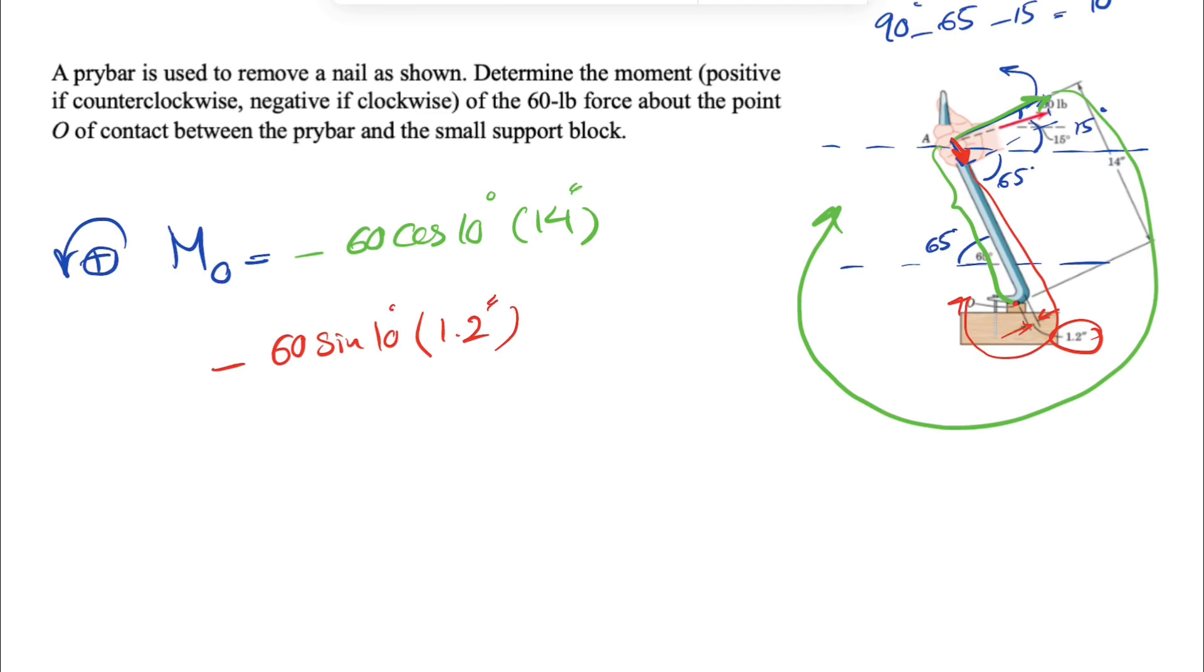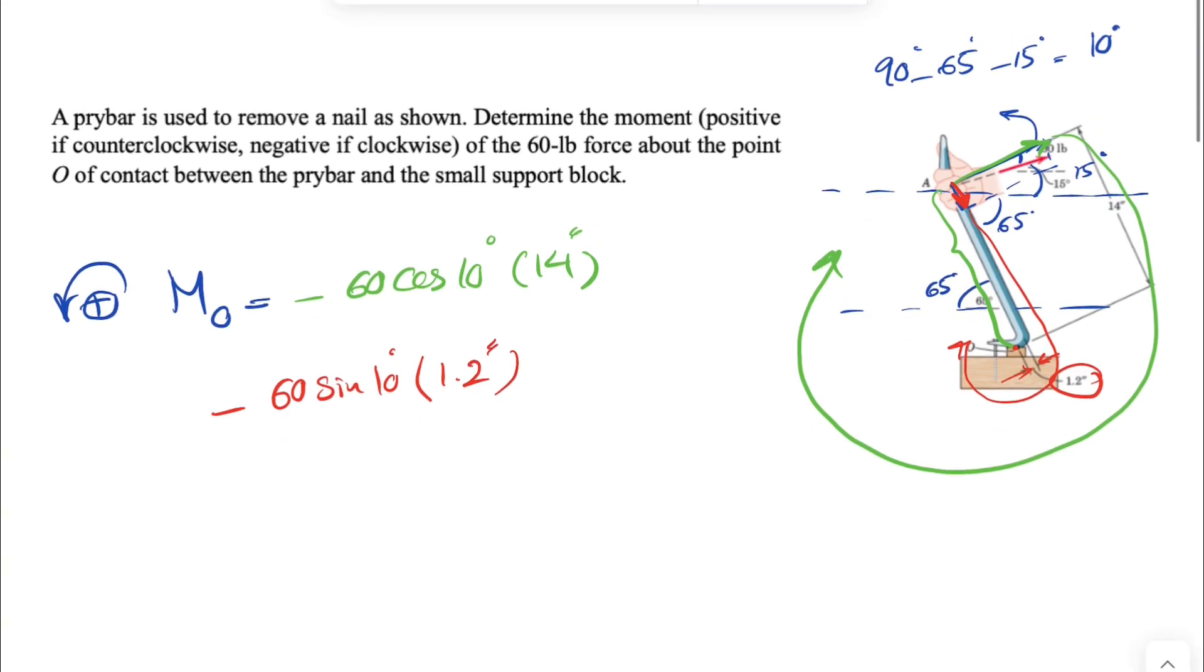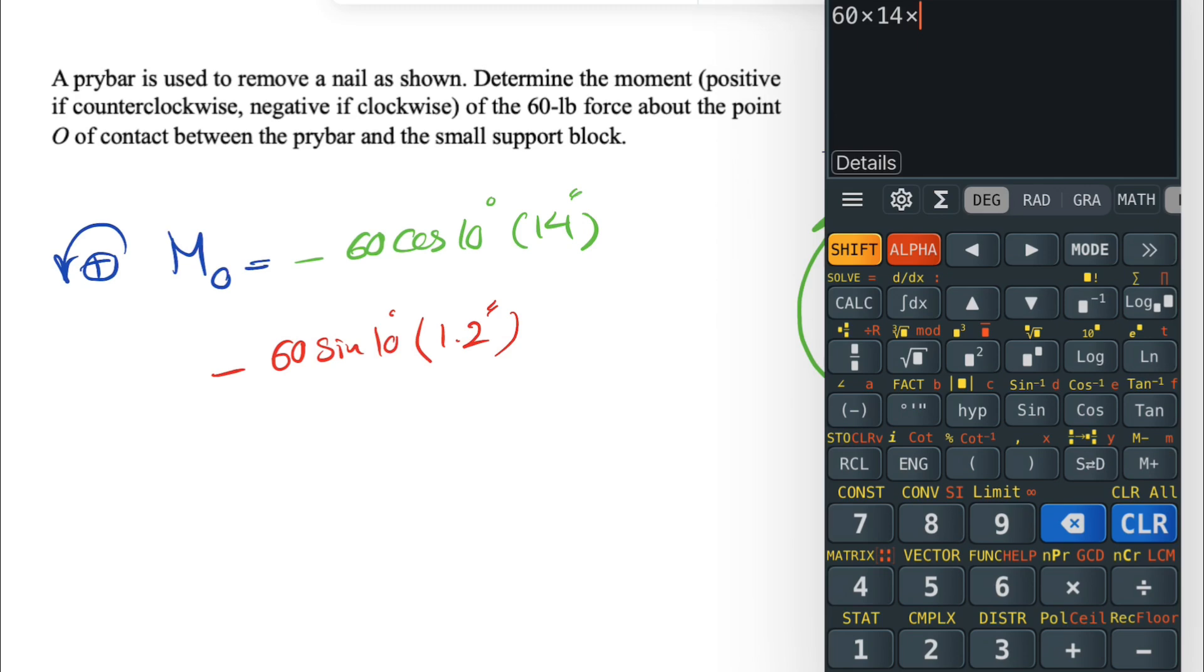So let's just calculate this. And that would be the fastest way to find the moment. So 60 times 14 times cosine of 10 plus 60 times 1.2 times sine of 10.